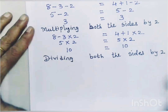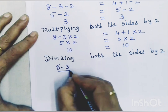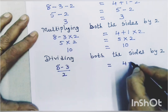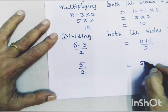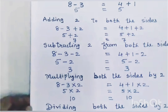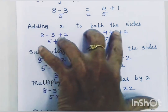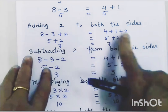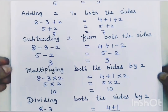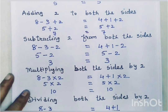Lastly, we will divide both the sides by 2. So 8 minus 3 divided by 2 equals 4 plus 1 divided by 2, giving us 5 upon 2 equals 5 upon 2. If we add, subtract, multiply, or divide by the same number on both sides, the value of the equation does not change — the left hand and right hand side values remain the same. This is the systematic manner to solve an equation.